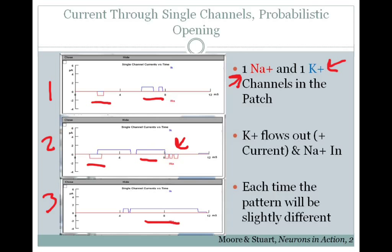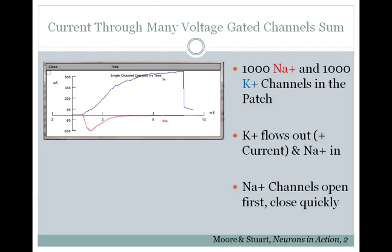So, with just one channel, it doesn't do the exact same thing every single time. If we then put in our patch a thousand sodium and a thousand potassium channels, the ionic current flow starts to look like what we saw before. So, you've got sodium current flowing at the beginning, it opens and closes fast.